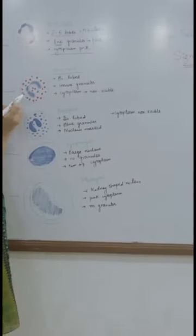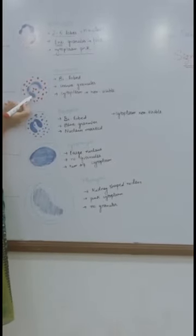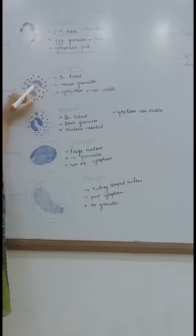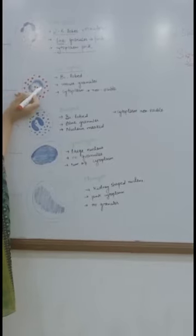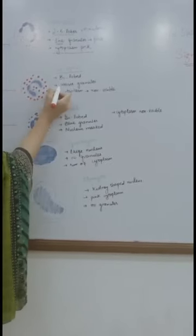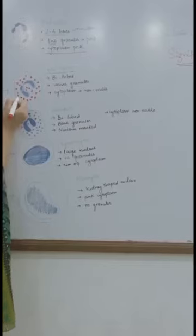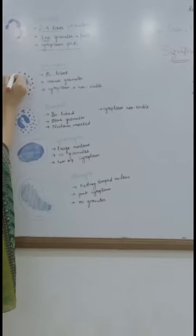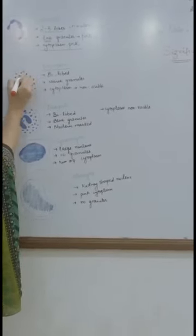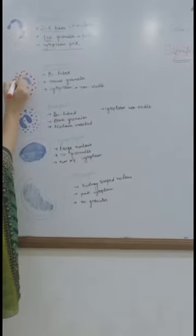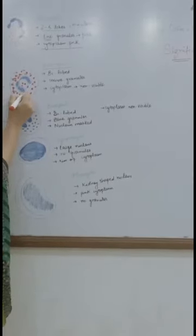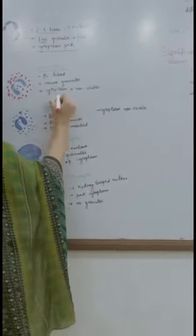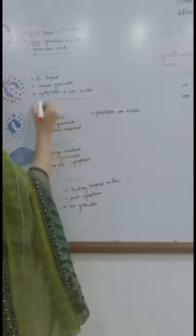Next we have eosinophils. Eosinophils have bi-lobed nuclei — this is one lobe and this is the second lobe. These have coarse granules which are also pink, but coarse, meaning rough and larger. So they mask the cytoplasm, and the cytoplasm appears almost non-visible due to the presence of these coarse granules.